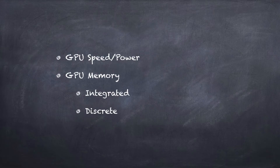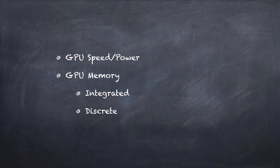There are two things to think about when looking at a GPU: one is the speed and power of it, but also there's memory use. A GPU comes with either discrete or integrated memory. Integrated simply means it's going to use the memory in your computer — so if you have 8GB of RAM and an integrated GPU, it might take 1GB of that and use it for graphics. Discrete means the GPU has its own set of memory, so you may see a GPU listed with 4GB of memory that's entirely its own and not shared with the system.